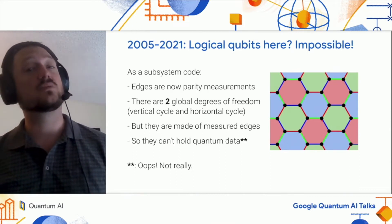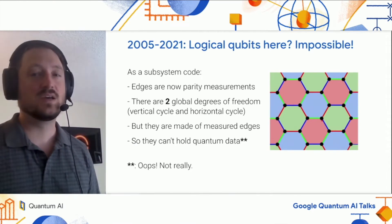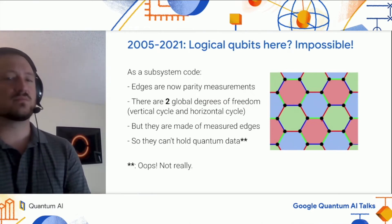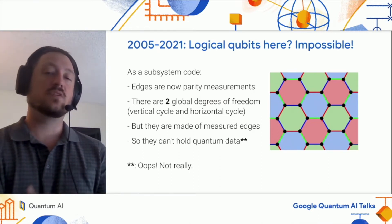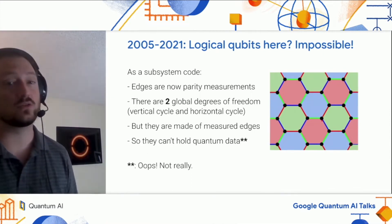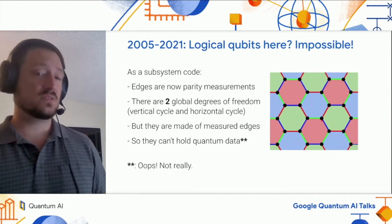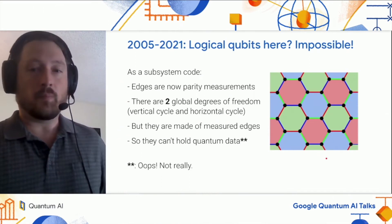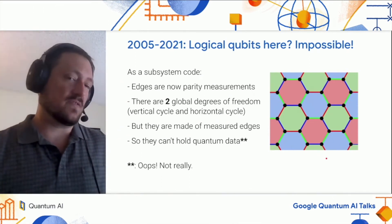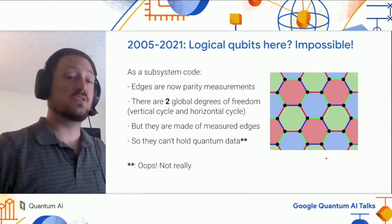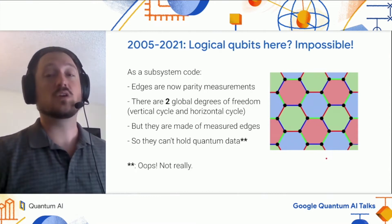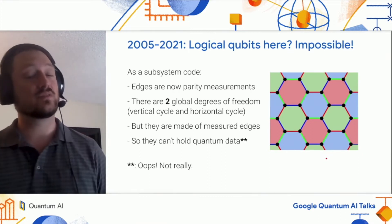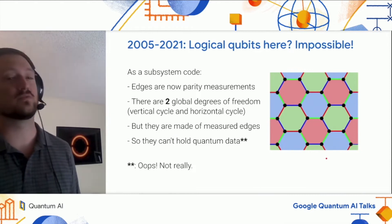If you analyze the degrees of freedom of the subsystem code, you appear to find something disappointing — it looks like it can't store quantum information. In order for information to be protected, it has to be stored in a global way, not a local way. And this layout has global cycles, like this vertical cycle of edges. That cycle is made out of things we're measuring. So if we try to use this cycle to store quantum information, we'd run into a problem. Storing quantum information requires not measuring it, and it looks like we're measuring enough things to learn the global cycles, so you can't store quantum information in the system.